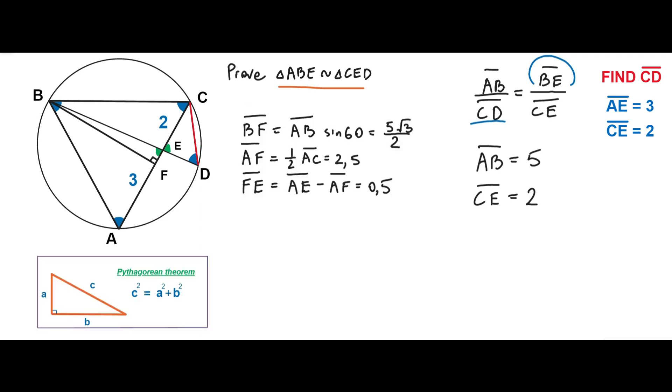Here we can use the Pythagorean theorem to find the segment BE. The segment BE is equal to square root 19.